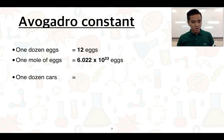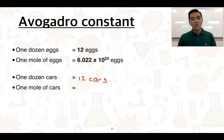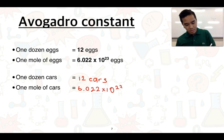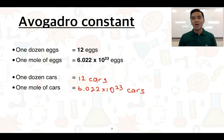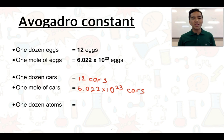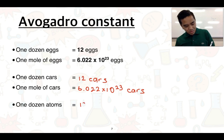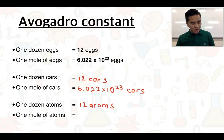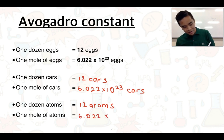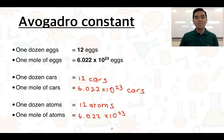If we have one dozen cars, we know that's equal to 12 cars. One mole of cars would be 6.022 × 10²³ — so we would have a heck of a lot of cars. And because we're really referring to chemistry — looking at atoms, molecules, and ions — one dozen atoms gives us 12, and if we have one mole of atoms, we're going to have 6.022 × 10²³. It's important that you keep that number in mind because you'll be expected to know this value.